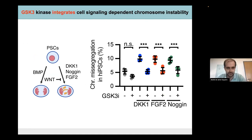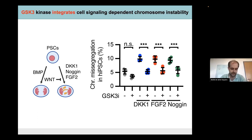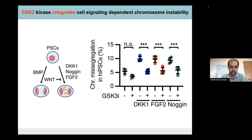Digging a bit more into the potential mechanism, we also found that GSK3 kinase, which is very important in many processes of self-renewal commitment in pluripotent stem cells, was actually having a critical role integrating the response to chromosome missegregation in pluripotent stem cells. Inhibition of GSK3 rescues the chromosome missegregation effects caused by either DKK1, FGF, or Noggin — which are the main morphogens I will talk about from now on. The mechanism is not only happening at the mitotic M phase, as one could imagine by the phenotype, but actually goes back to the beginning of S phase and during DNA replication.